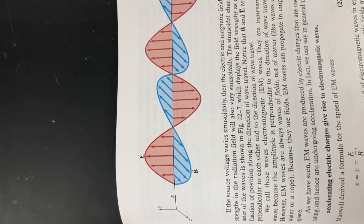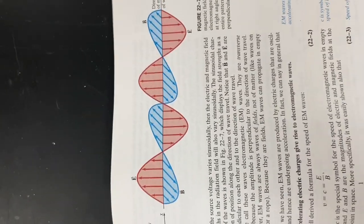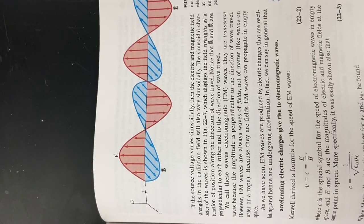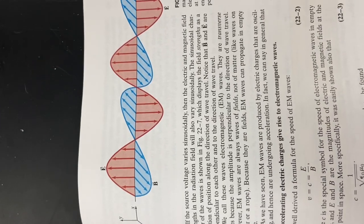So if you look at this picture here, they've represented the electric field with red and the magnetic field with blue. And you can see that they crest at the same time.